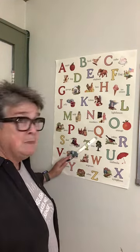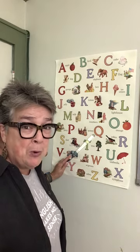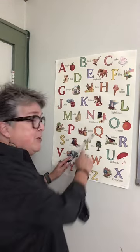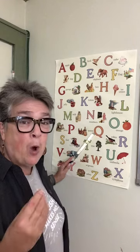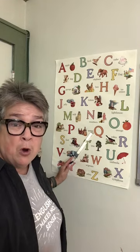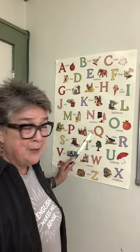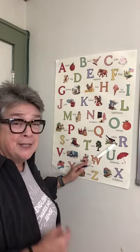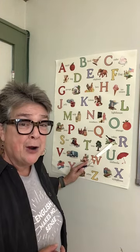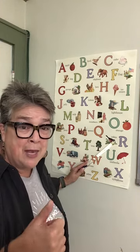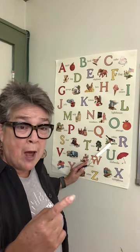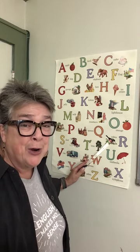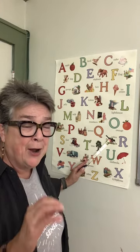Q comes after P. Q always is with his best friend U. Together they make the QU sound, like in queen or quirky. Then we have R, as in robin, or red, or round. R.